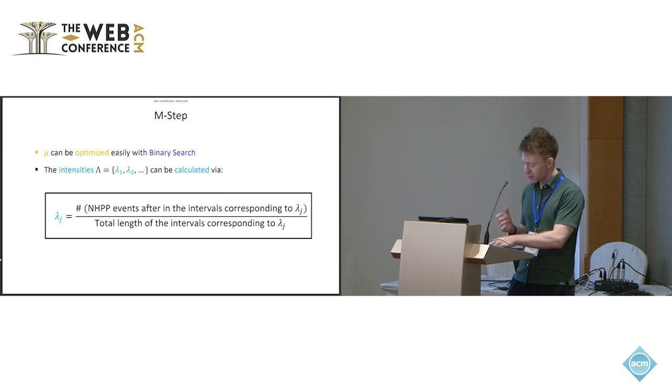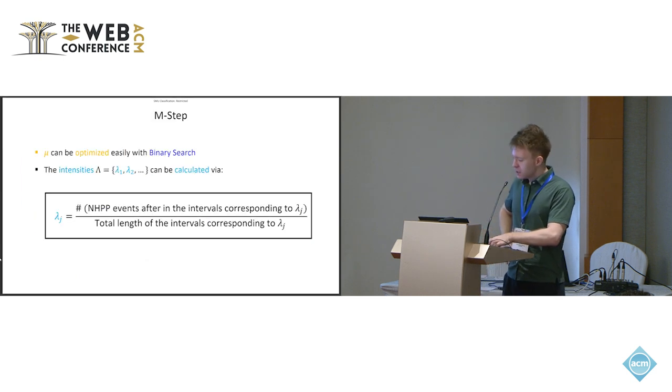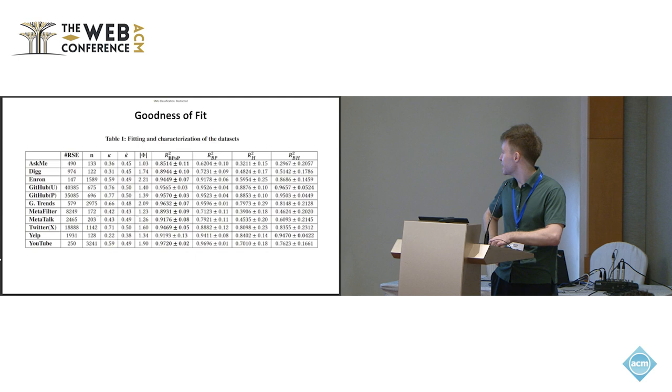So this would not have been possible if we were using other processes like Hawkes processes with long-term dependency. That would make the complexity higher. The M step is reasonably straightforward. You've got intuitive formulae that we derive in the paper. It's basically like doing inference on standard Poisson process.